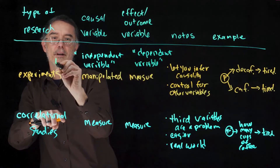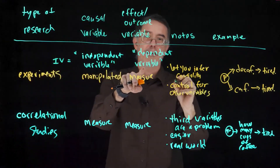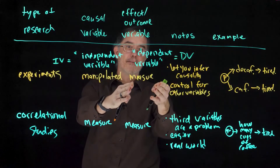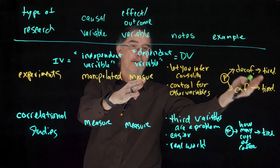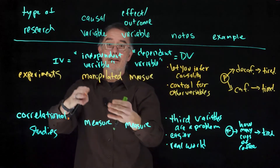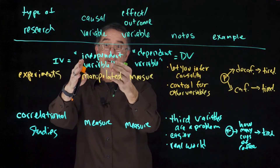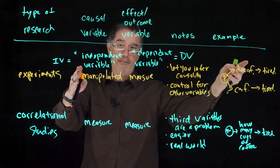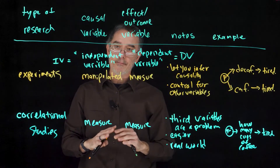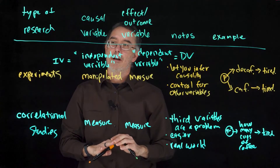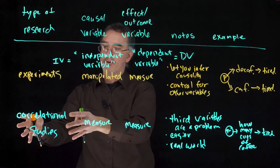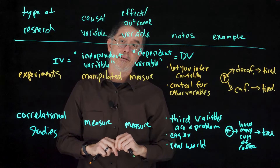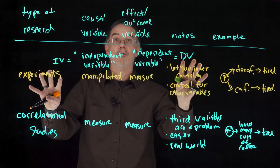For short, the independent variable is often called the IV, and the dependent variable is often called the DV. The idea is that the dependent variable — tiredness — should depend on the manipulated independent variable, whether you had decaf or caffeinated coffee. This is a really important distinction in research, and with experiments you have special language to describe the variables in your study.